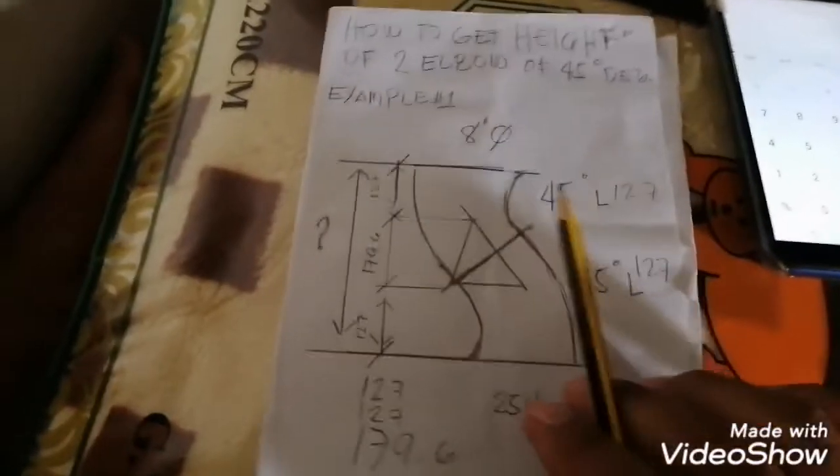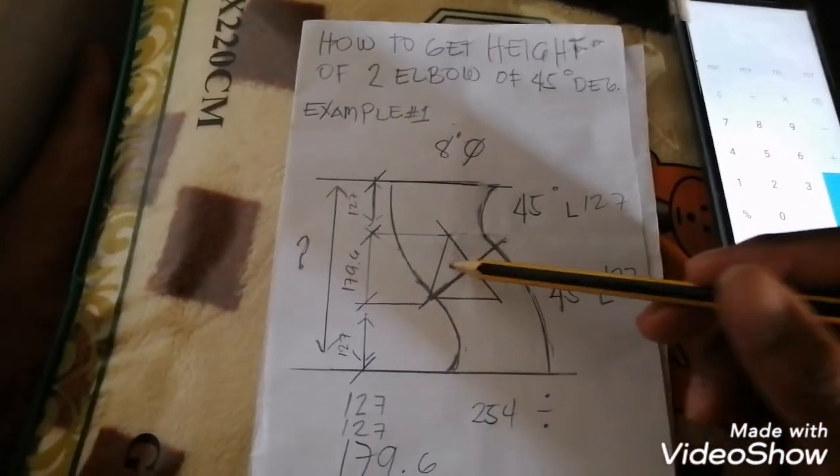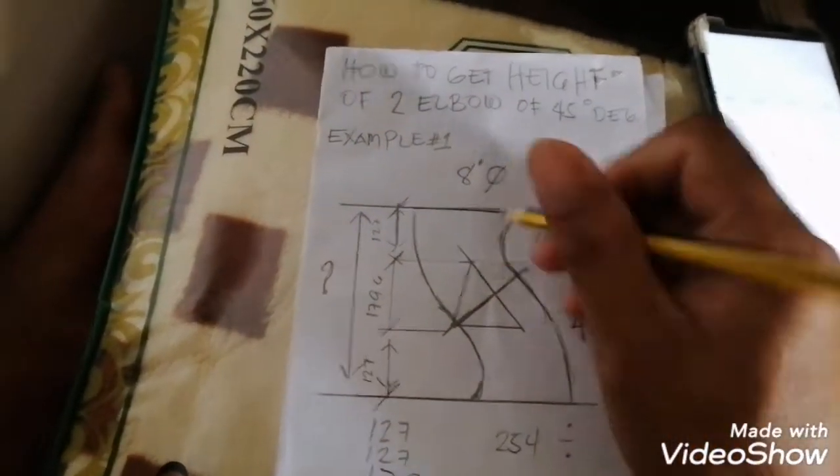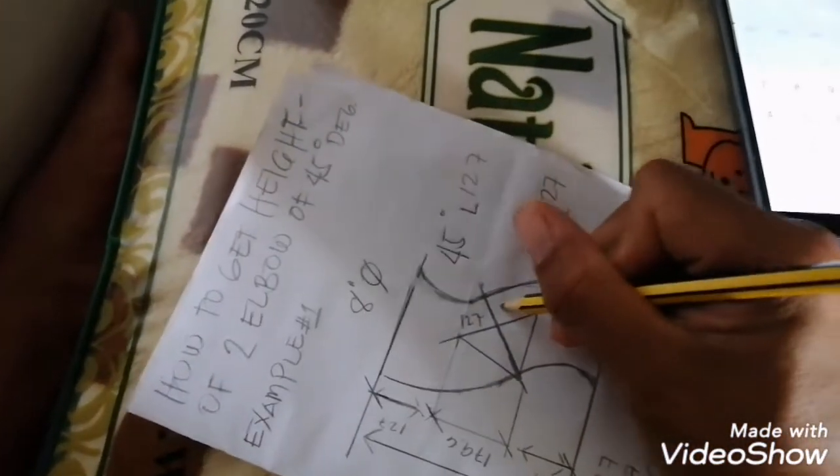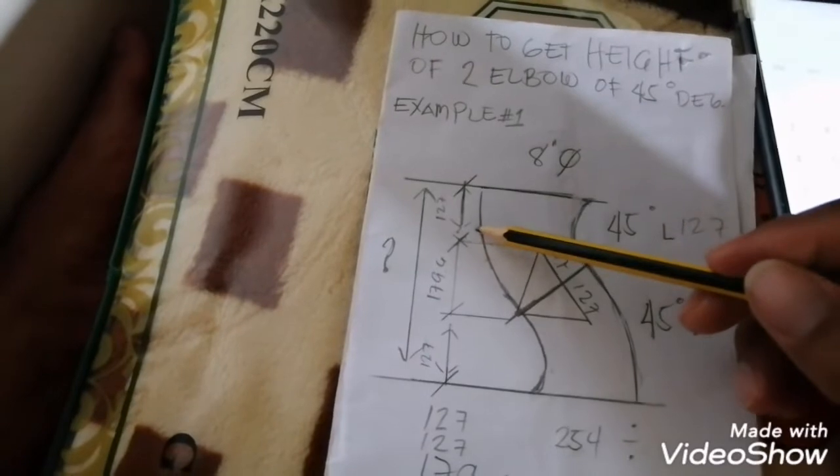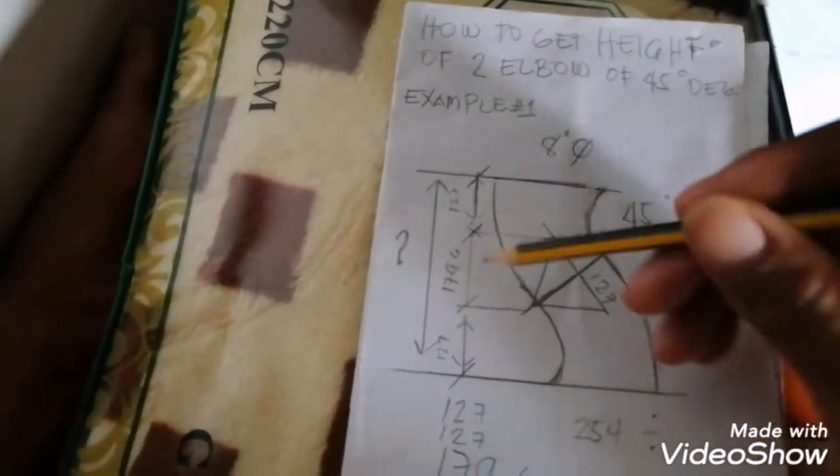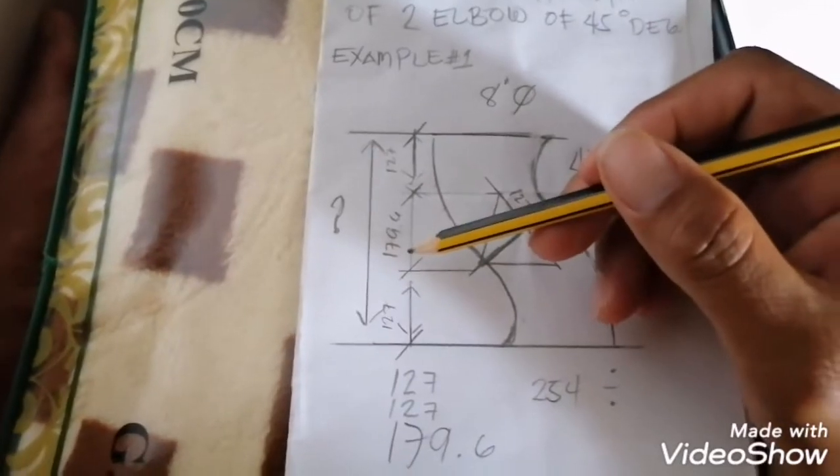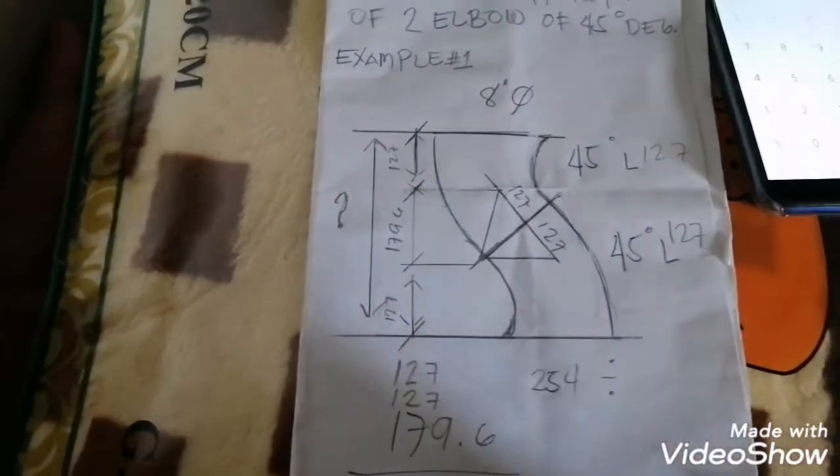This is two hypotenuse of the 45-degree elbow. This side is 127, this side is 127. This is 127 at the center, and the center going up is 179.6. Then computation.